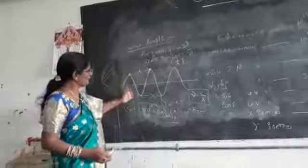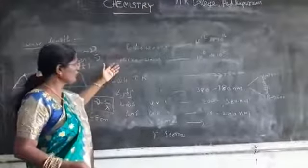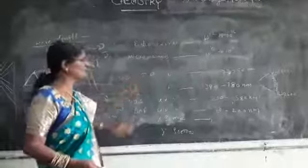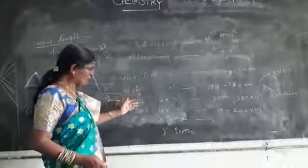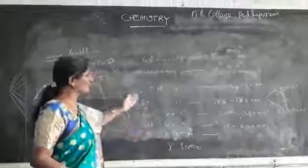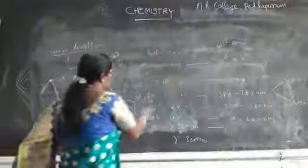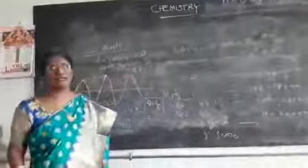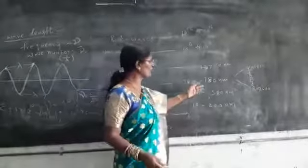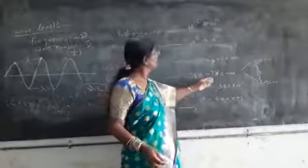In the electromagnetic spectrum, we have radio waves, microwaves, infrared, visible light, UV, and X-rays. The visible light range spans from 380 nanometers to 780 nanometers, which is 3800 angstroms to 7800 angstroms.